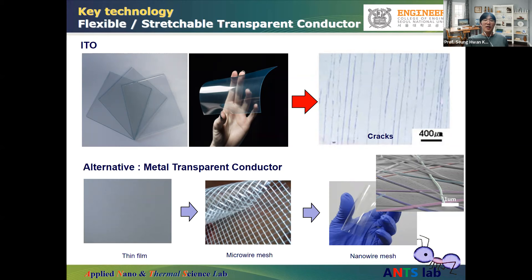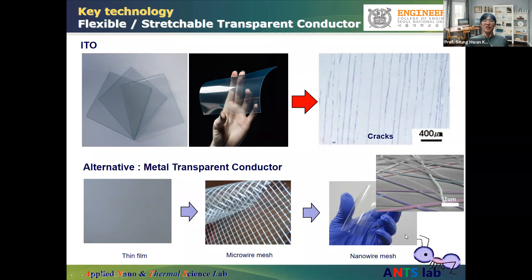Metal is an ideal material for electronics due to high electrical conductivity, but bulk metal is not transparent. However, if metal is made into nanomaterial, it can be transparent while keeping good electrical conductivity. Besides good electrical conductivity and transparency, it can also have good flexibility and stretchability — making it the ideal material for transparent electronics with flexibility and stretchability.